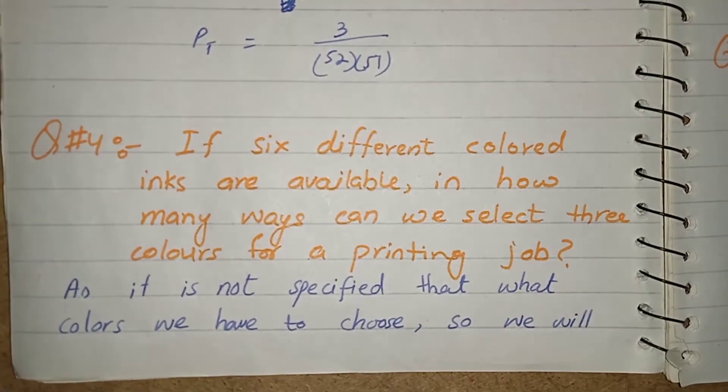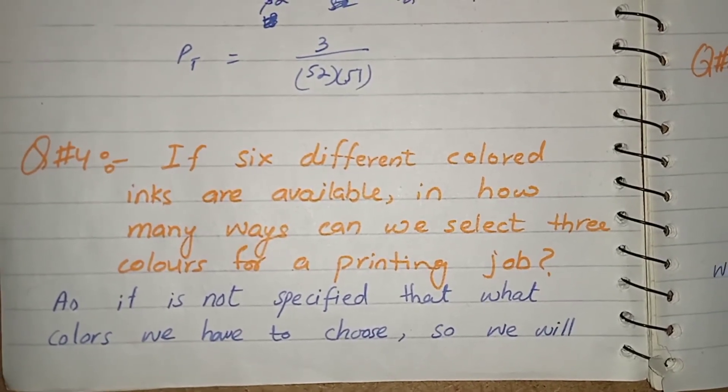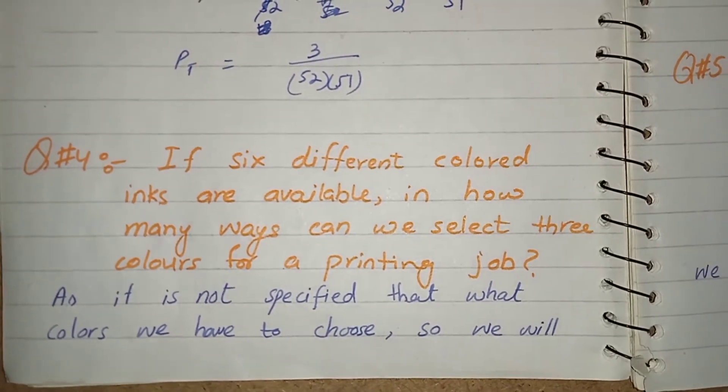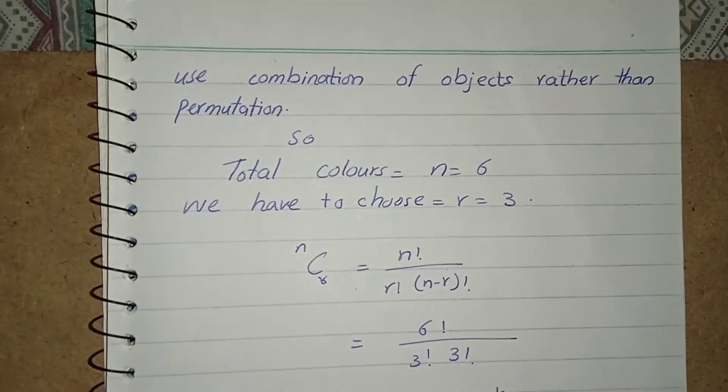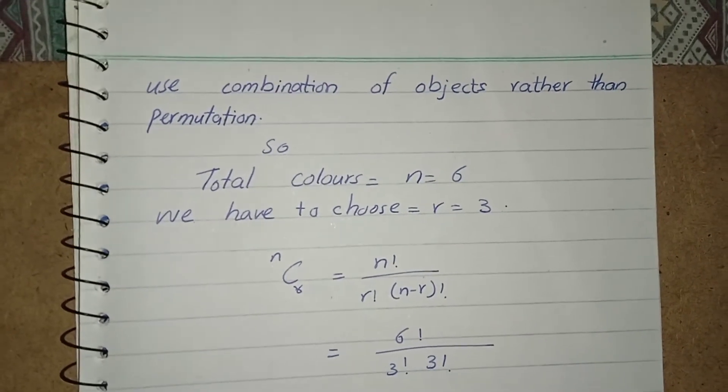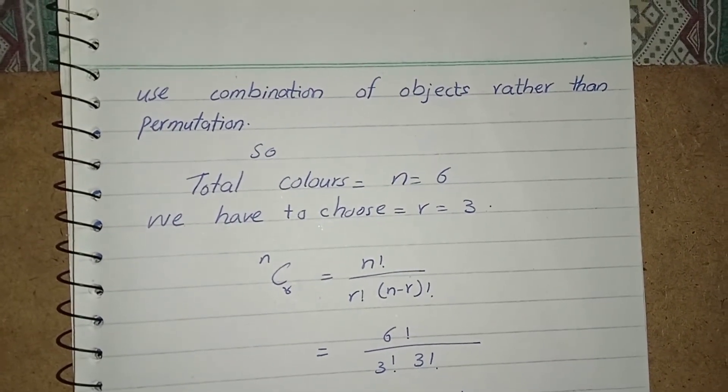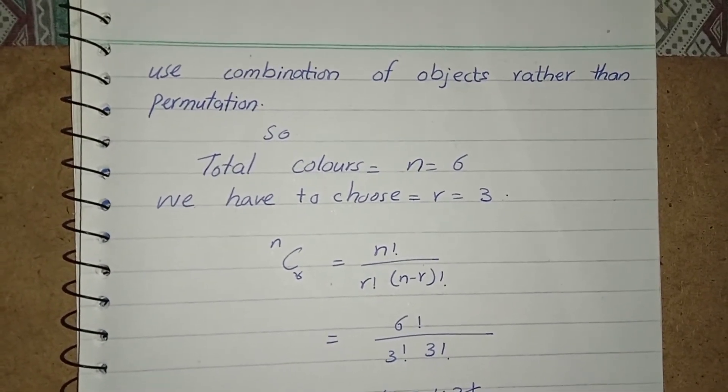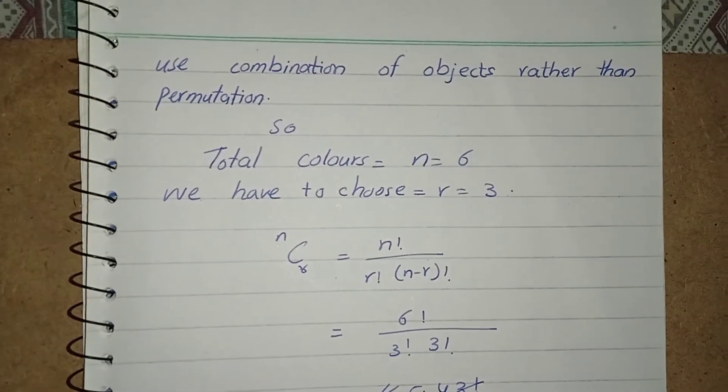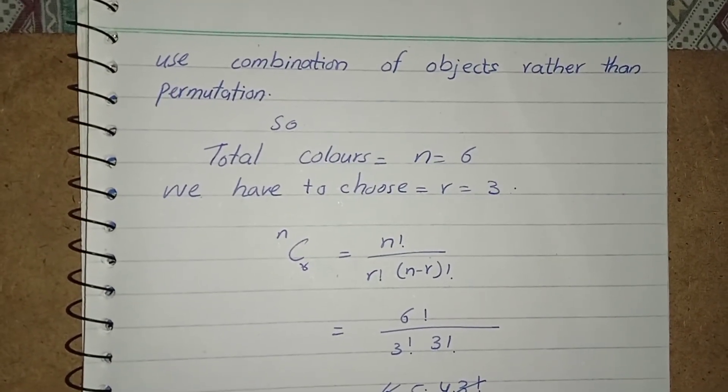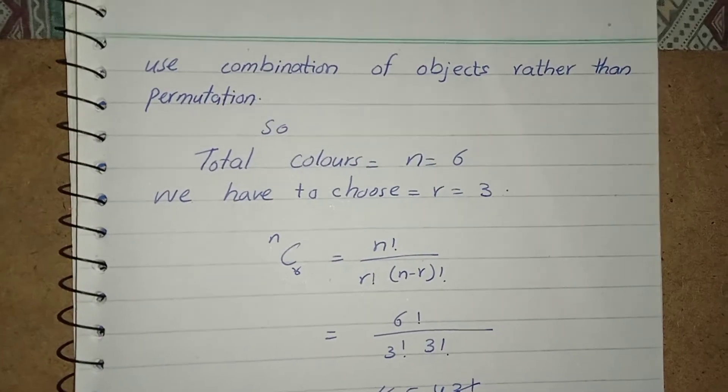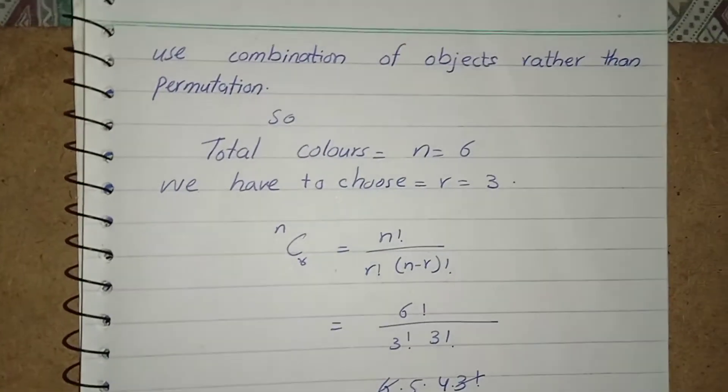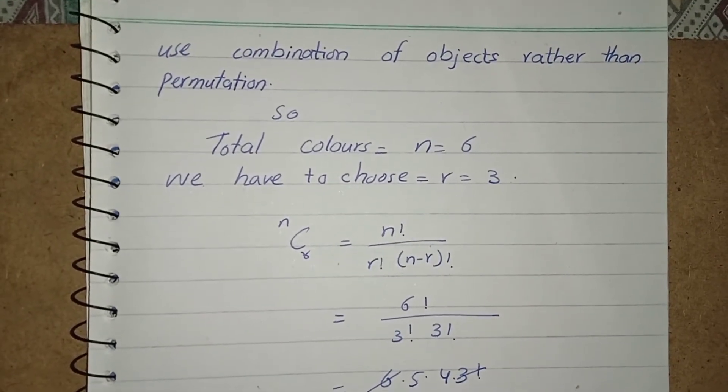Question number 4 is that if 6 different colored inks are available, in how many ways we can select 3 colors for a printing job? At first before deciding that we have to find the permutation or the combination of the given question, let me tell you one thing that they didn't give us any hint to arrange. The colors mean the order is not important. In which way we arrange them are all acceptable. Not any specific order to arrange them is given.